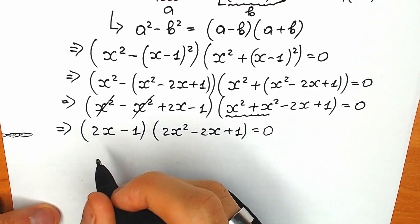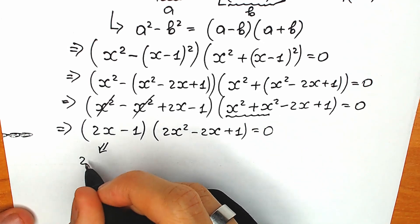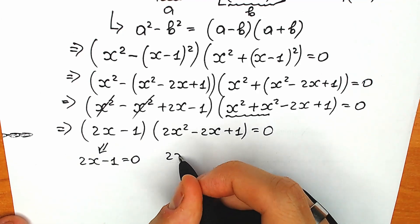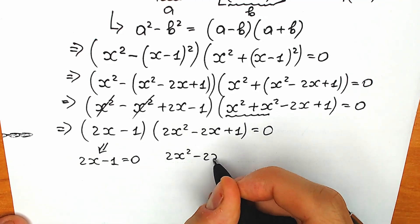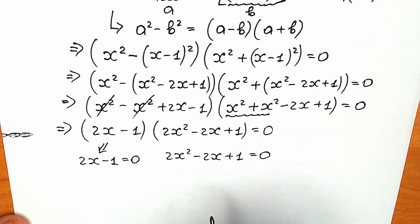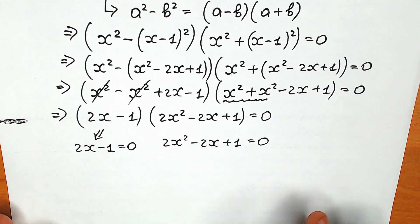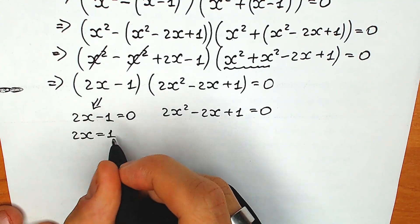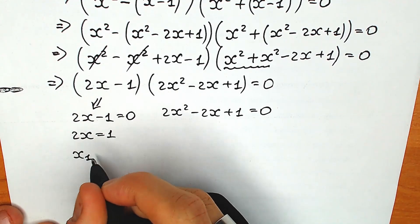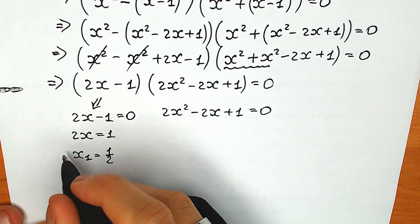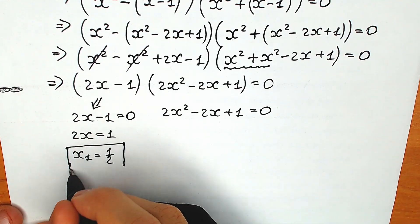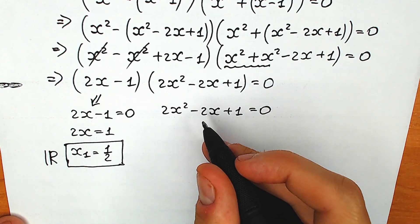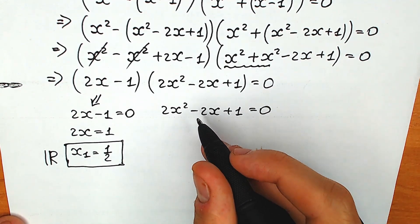The first branch: 2x minus 1 equals 0. We easily solve this: 2x equals 1, so x₁ equals one half. This is our first real number root, which we'll verify a little bit later.